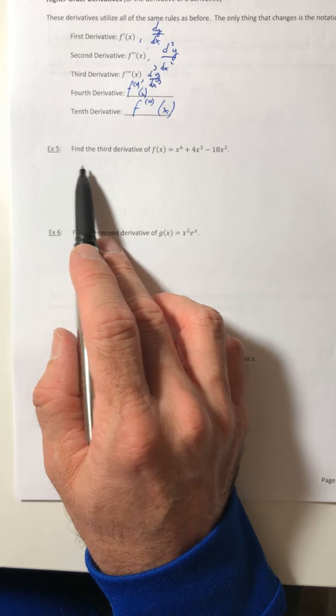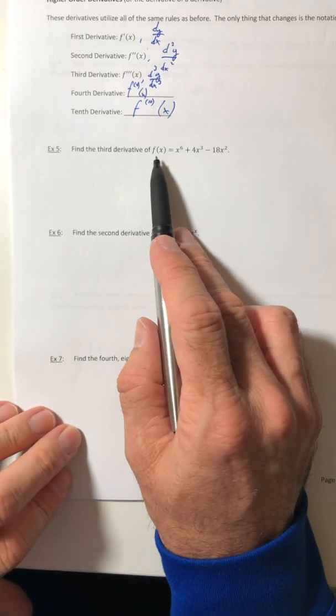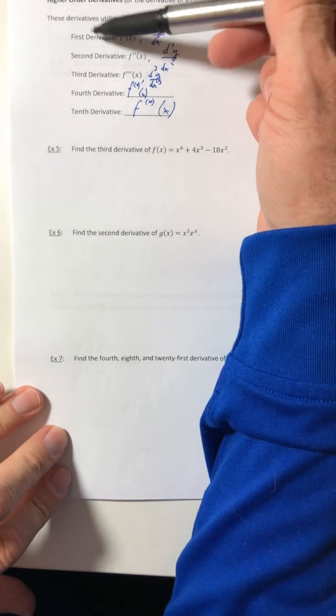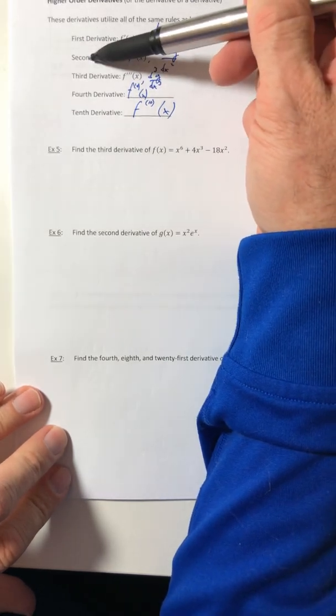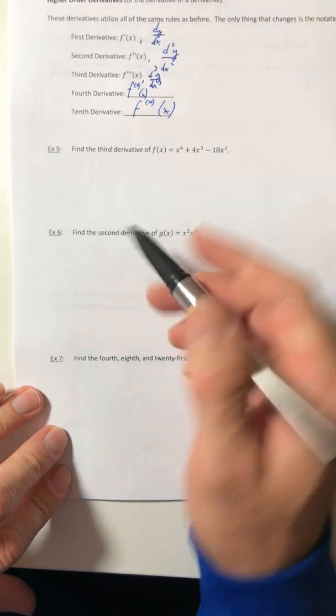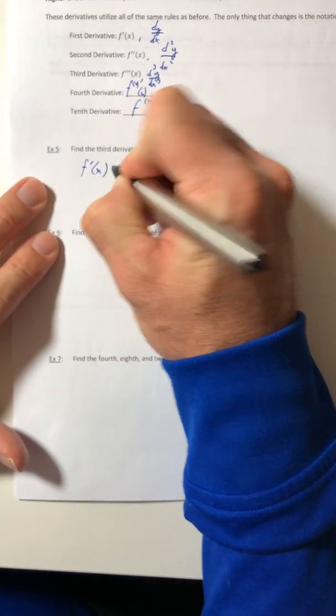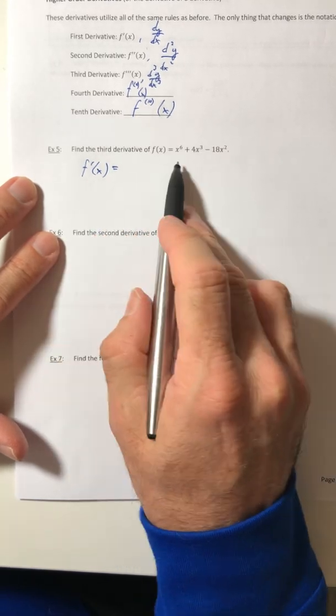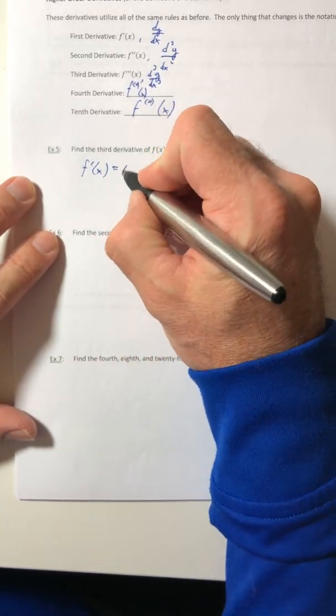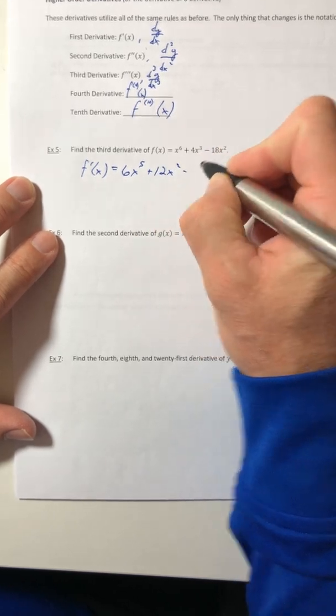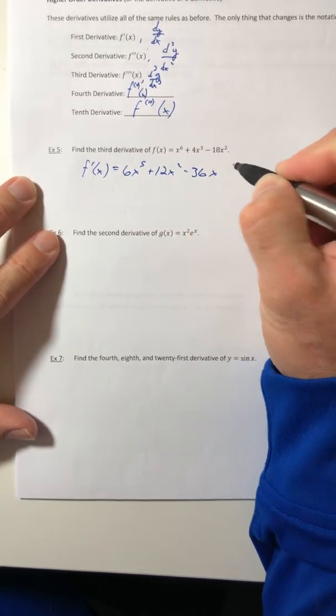So find the third derivative of this function here. Once you get to the third, we've got to work our way down. So you've got to get the first, then the second, and then finally the third. So the first derivative, or f prime, would be 6x⁵ + 12x² - 36x.